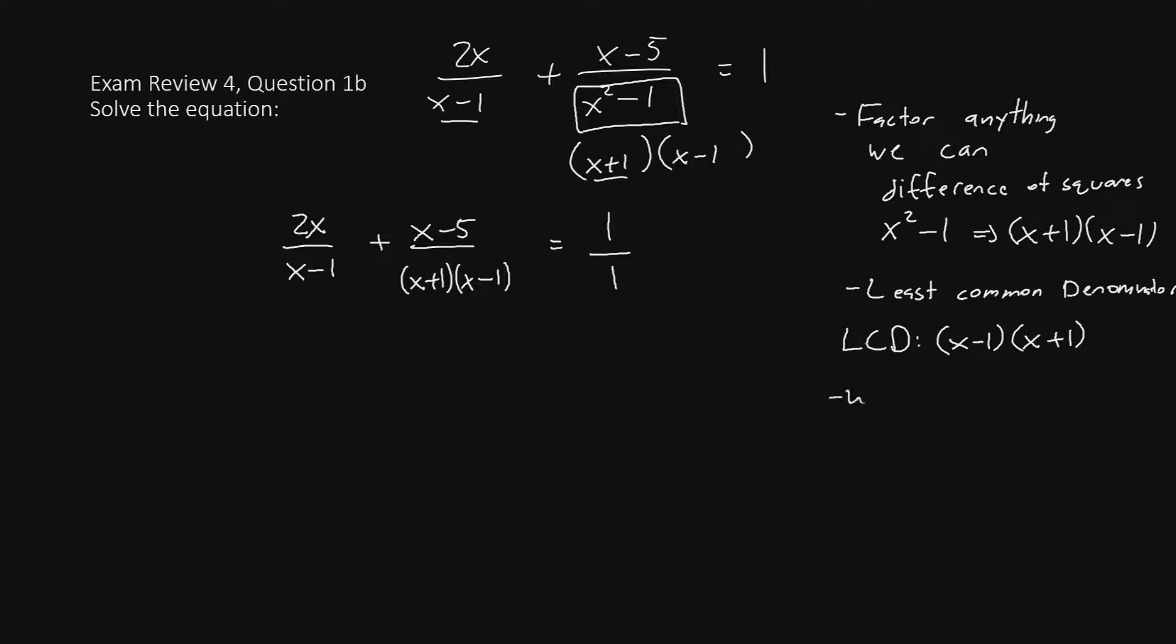Now we have to ask ourselves, what does each fraction need? Remember that our goal is to make each fraction's denominator look like the LCD that we just came up with. Let's first examine the fraction on the left. It has x minus 1, but it needs to have x plus 1 to go with it. The second fraction has x plus 1, x minus 1 in the denominator. This is a perfect match for the LCD, so this one is okay. The third fraction only has 1 in its denominator. It will need to have both x minus 1 and x plus 1.